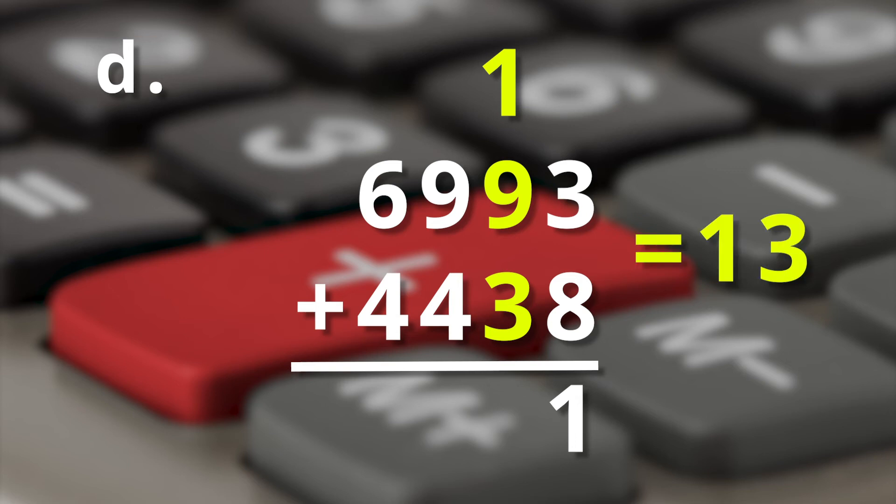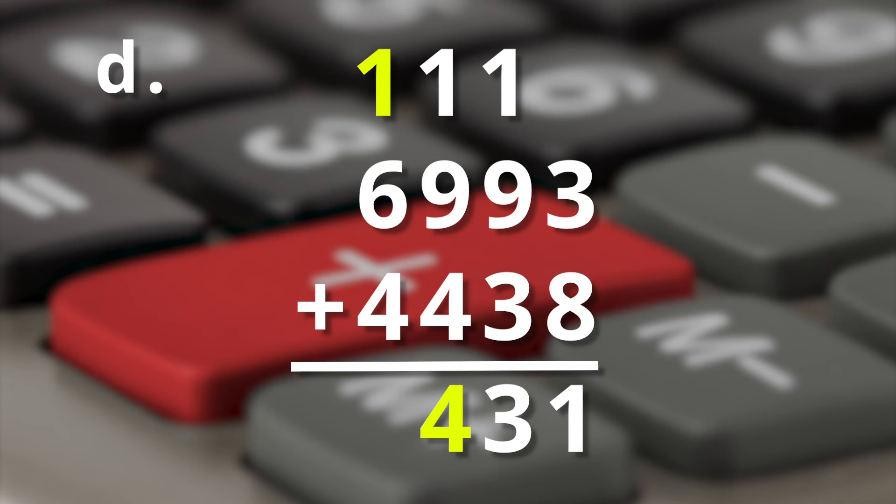So a three goes down and a one goes up into the hundreds column. So one plus nine plus four equals what? Yep, fourteen. Carry the one up into the thousands column. So you've got one plus six plus four, which is eleven.